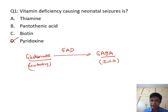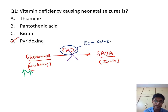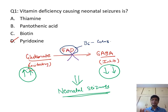During this reaction, the rate-limiting step is glutamic acid decarboxylase. GAD requires B6, that is pyridoxine, as the coenzyme. If there is B6 deficiency, this step will not happen, leading to a relative excess of excitatory neurotransmitter glutamic acid and deficiency of inhibitory neurotransmitter GABA. This manifests as neonatal seizures. So the answer to the first question is D — pyridoxine deficiency.